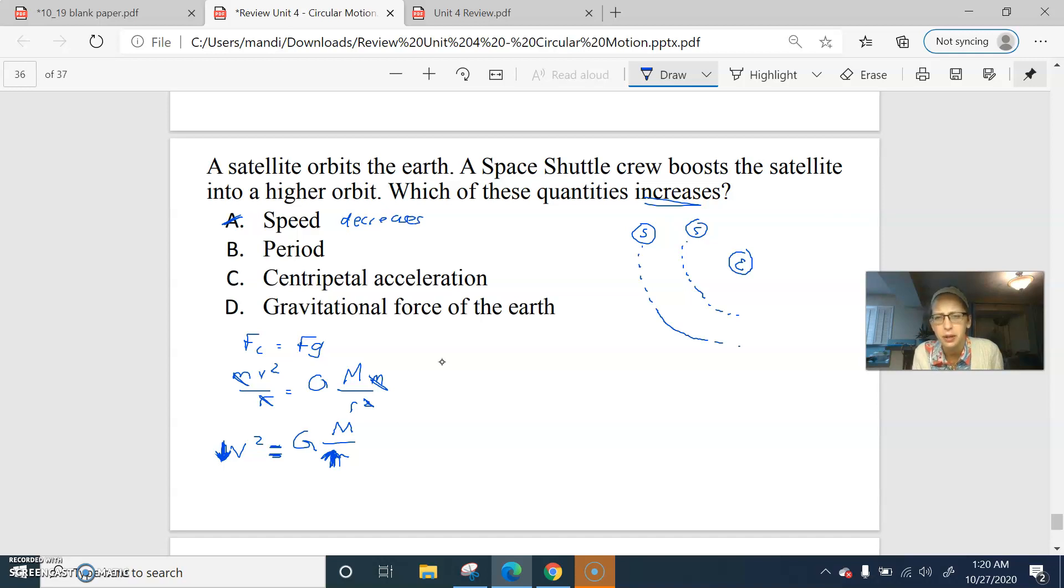Time period. Well, velocity is distance over time. The journey that this takes, that's one circumference, so that's 2πr. And the time is one T. So velocity is 2πr over T.